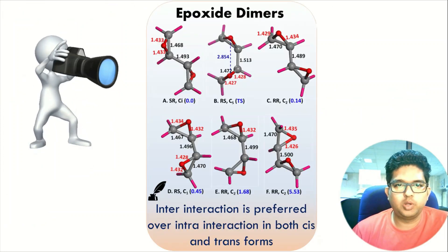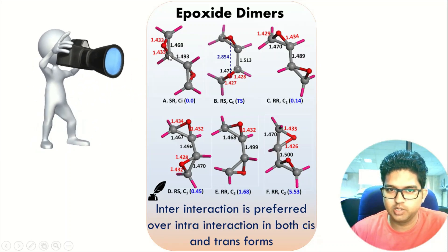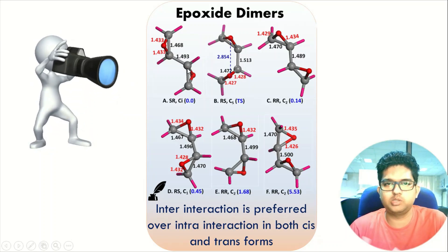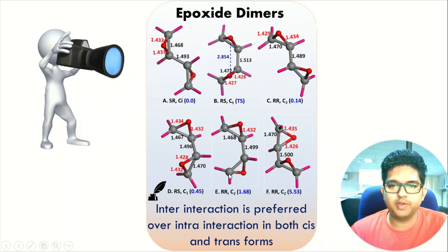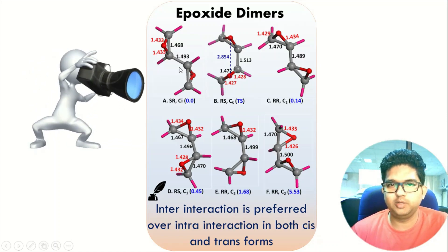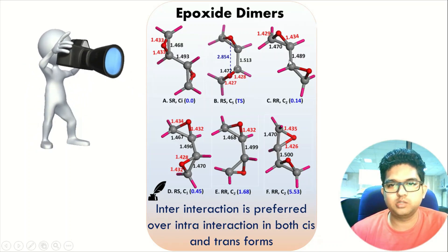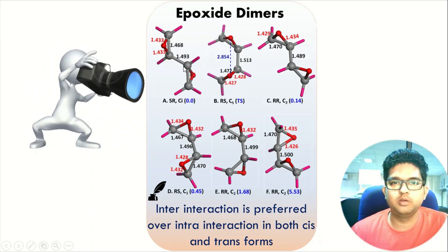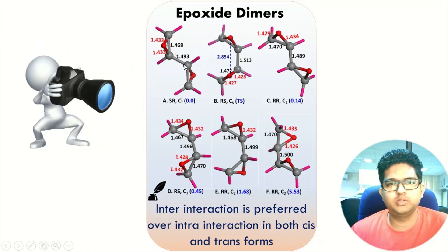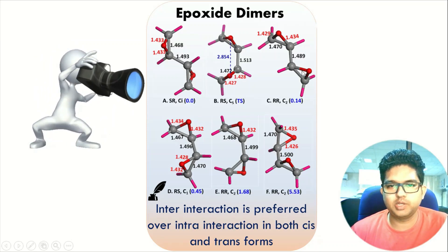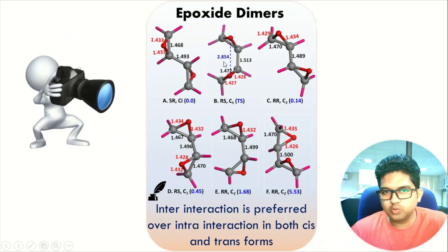Now let's look at some molecular pairs. The molecule in this case is a three-membered ring — the epoxide — and this is just the dimer of the epoxide molecule. These are various isomers of this molecule depending on how you are keeping the epoxy groups. Here it is trans, here it is cis, here the carbon framework is also in a trans arrangement, and here it is a cisoidal kind of system. These are the various possible isomers.